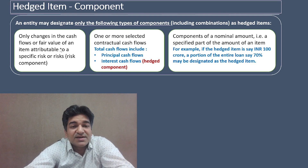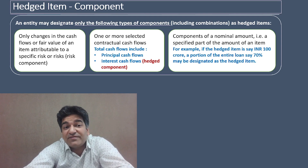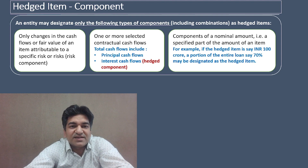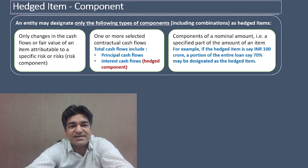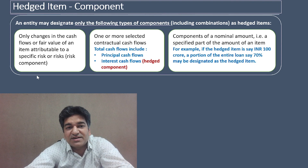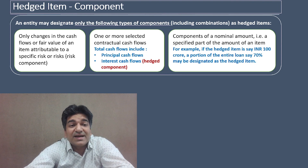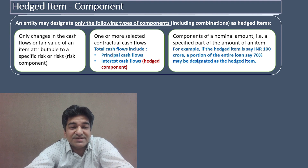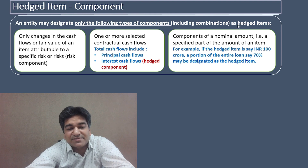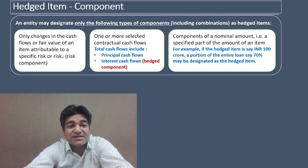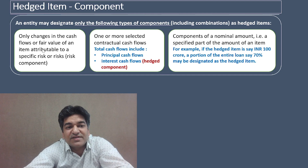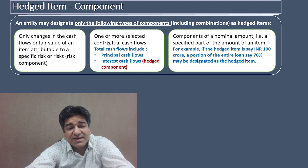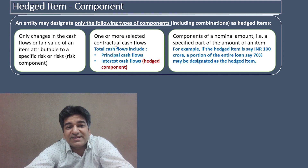Component number one: only changes in the cash flows or the fair value of an item attributable to a specific risk can be designated as a hedged item. There are specific risks associated with a particular item. Ind AS 109 says you can designate changes in cash flows or fair value changes of an item as a hedged item. It is not necessary that all risks have to be hedged — a specific risk or risks can be hedged.